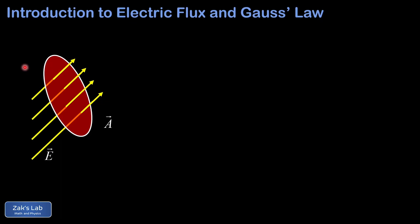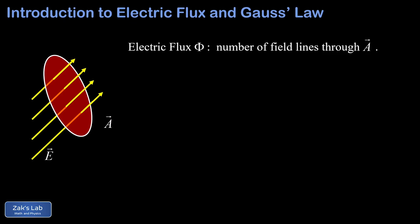In our picture here, we see a patch of area that we call A and a uniform electric field with field lines that are poking through the area A. The main geometric idea here is that we're counting the field lines that pass through A, and that's the electric flux, which we usually give the symbol capital Phi. The orientation of this surface is described precisely by a normal vector perpendicular to the surface with unit length, called N hat, which makes an angle theta with the direction of the electric field. The area vector A is just the magnitude of the area A with the direction given by N hat, so A vector equals magnitude A multiplied by N hat.